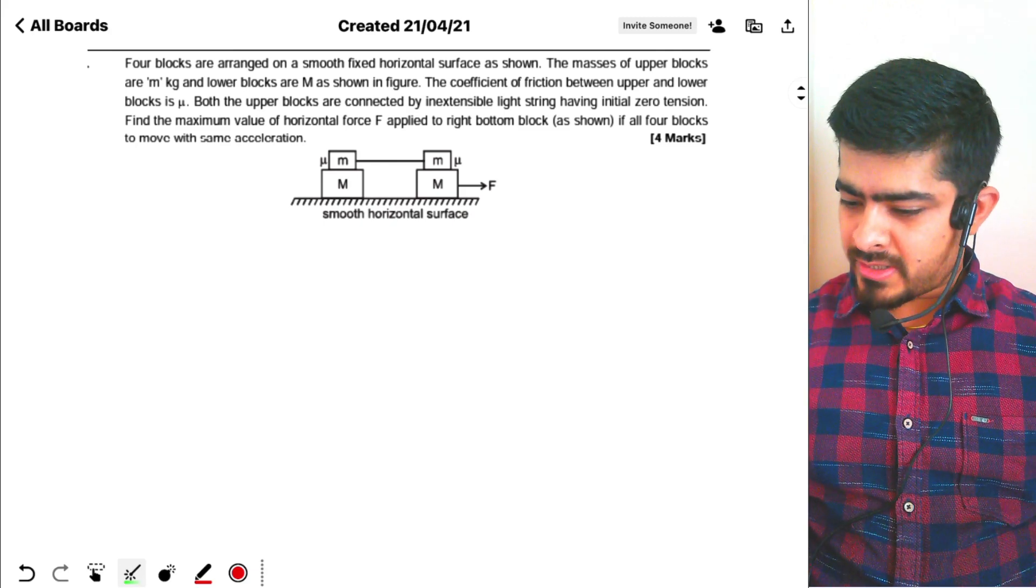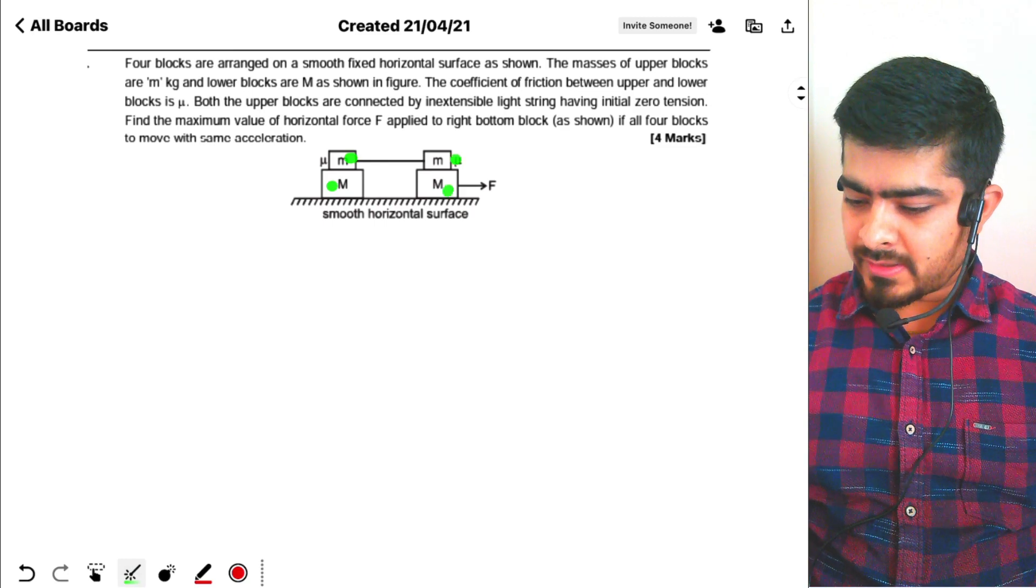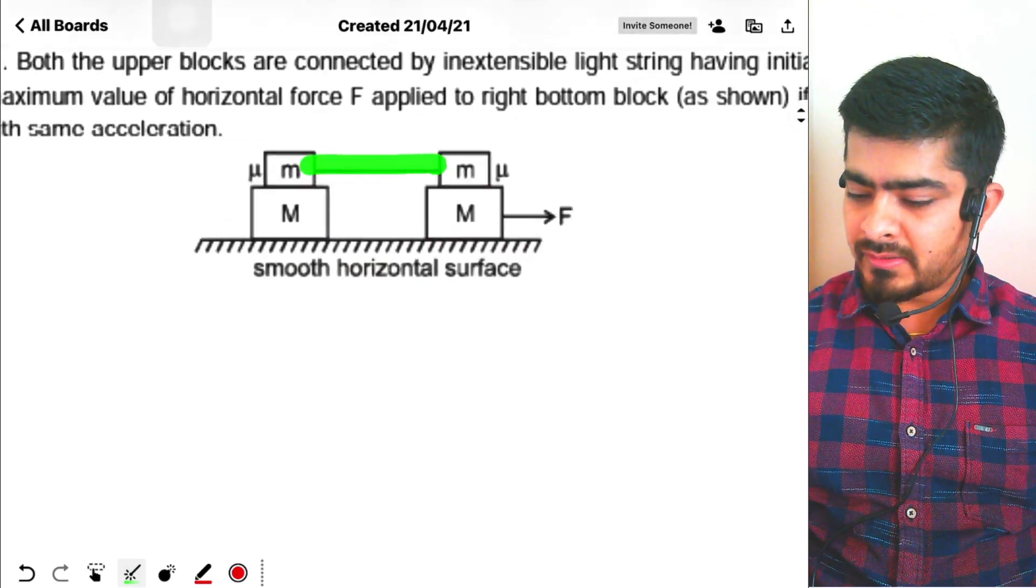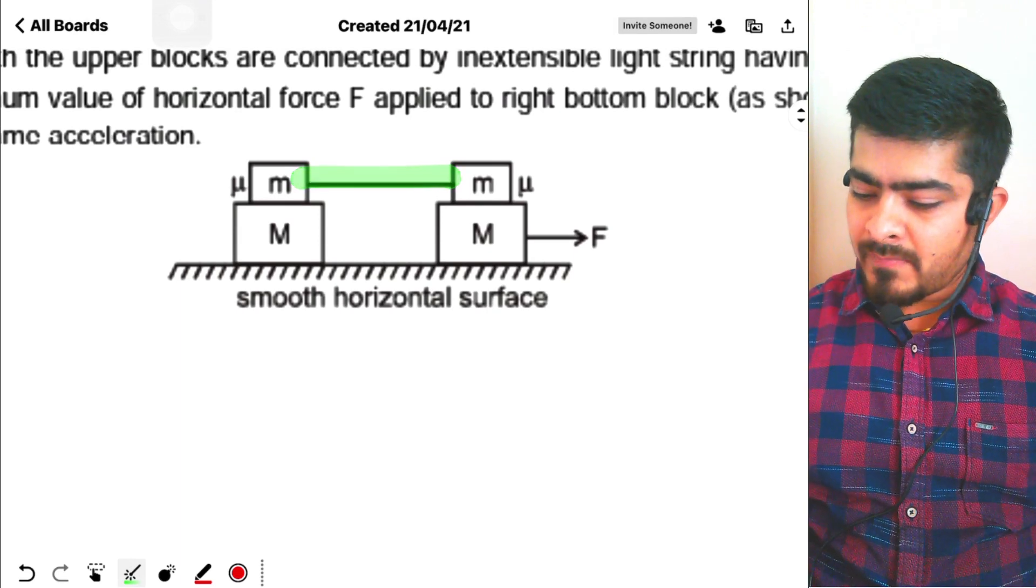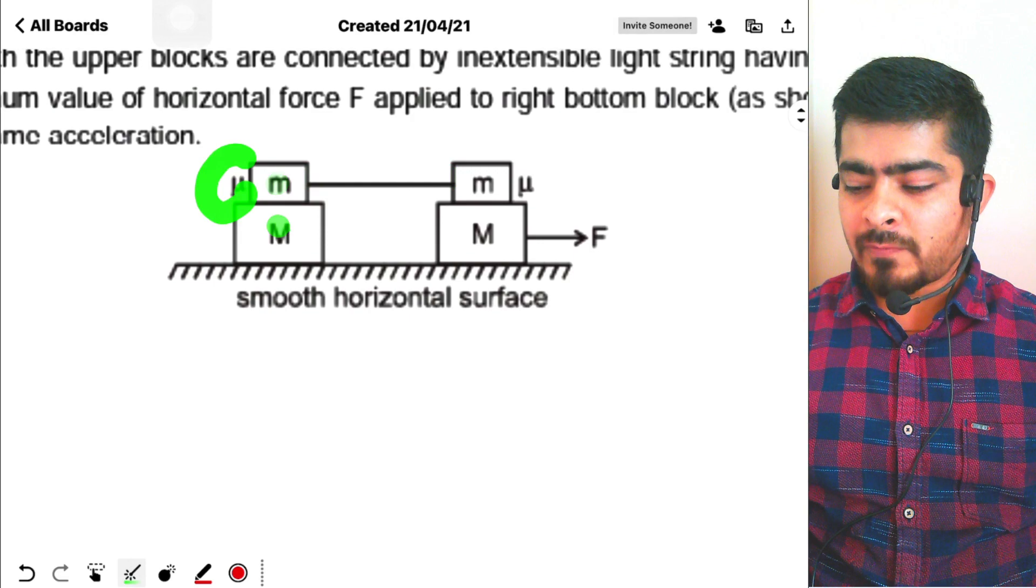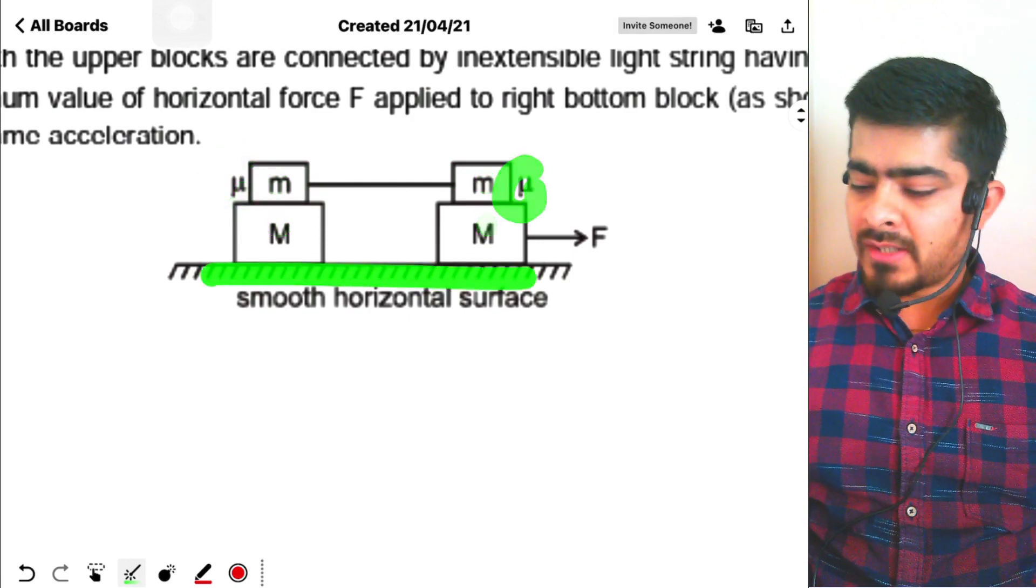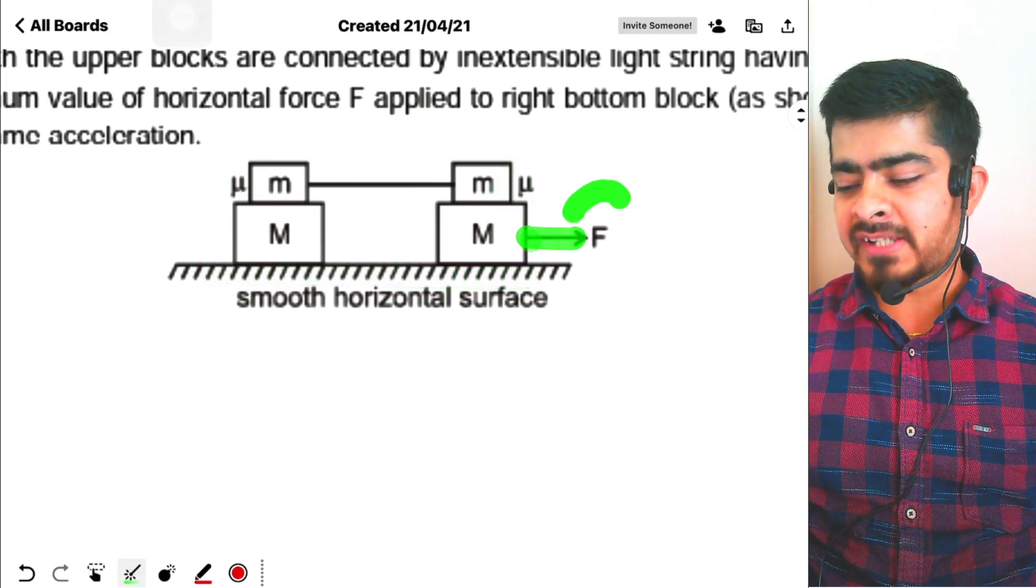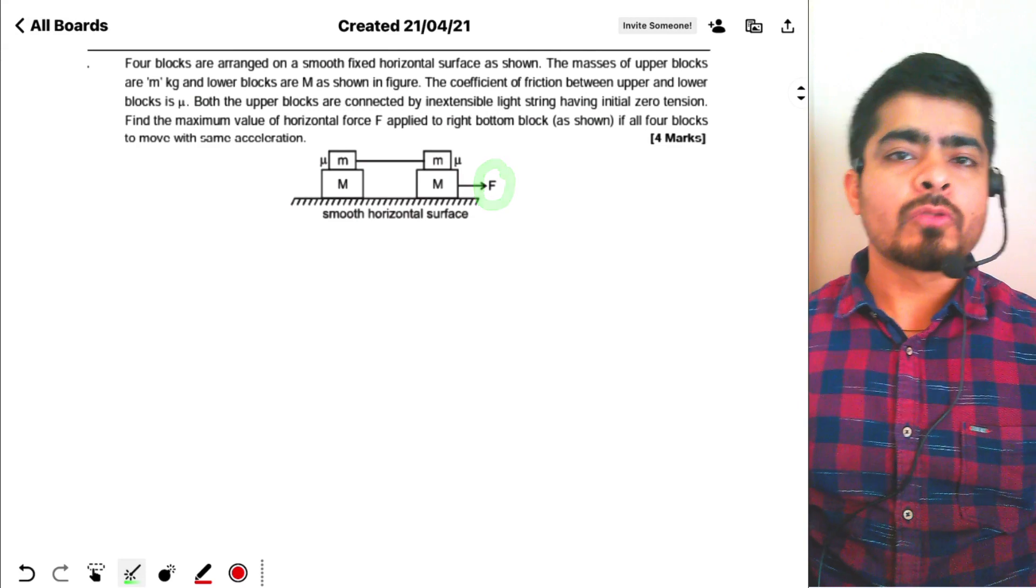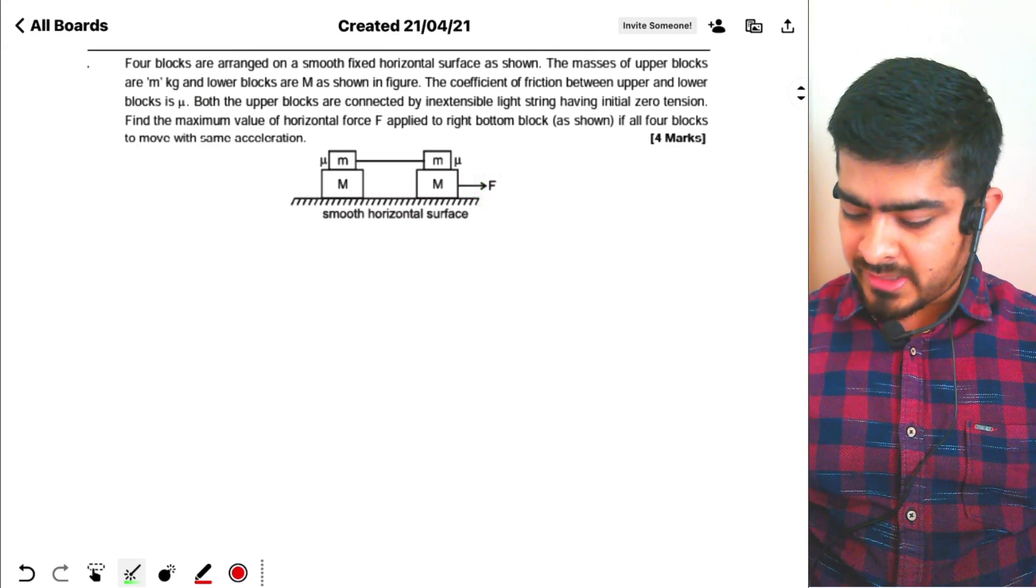Hello students, so this is a question based on friction. We have four blocks kept like this. The upper two blocks are connected by a string, and there's friction between these two blocks whose coefficient is mu. There's also friction between these two blocks whose coefficient is again mu, and the ground is smooth. Now we are pulling with a force F and we have to find the maximum value of F so that the blocks all move together without any relative sliding. The question is very easy.